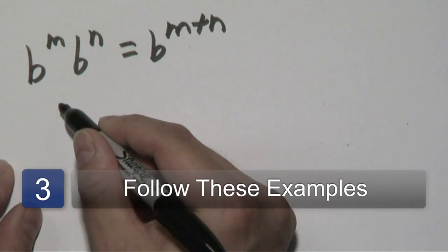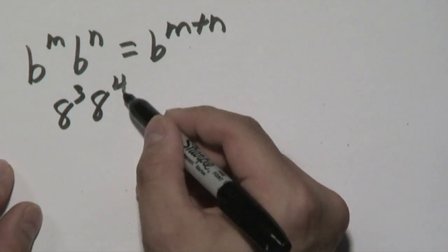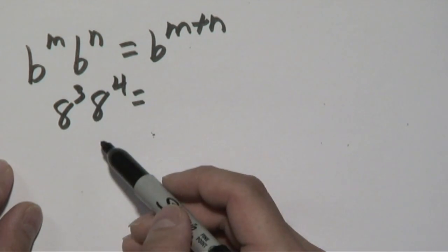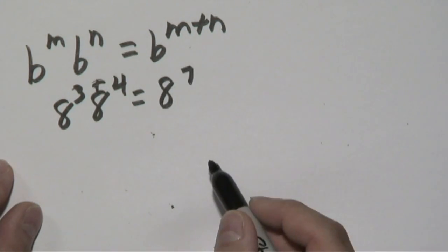So for example, if you have 8 to the third times 8 to the fourth, making sure the bases match, you take the 3 and you add it with the 4, so you have 8 to the 7th power.